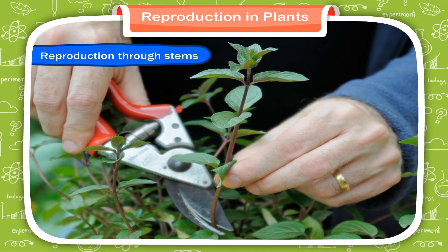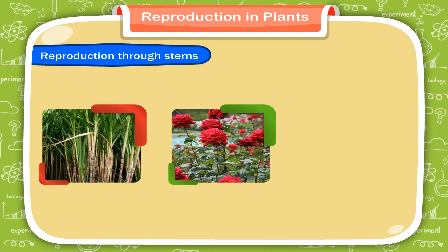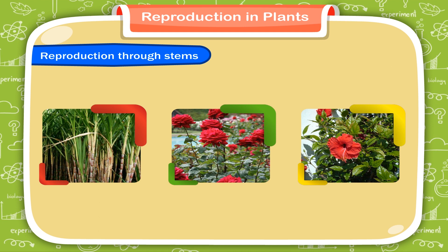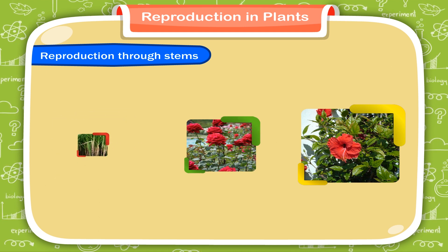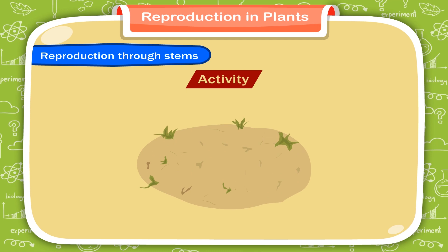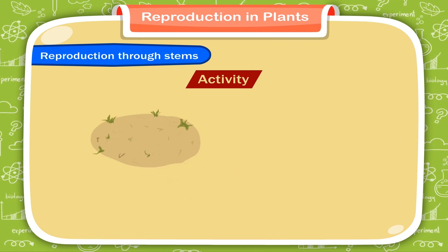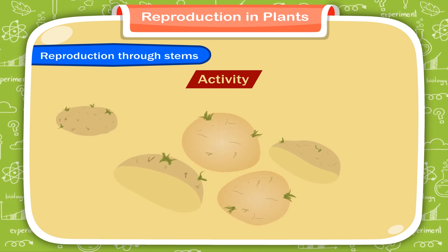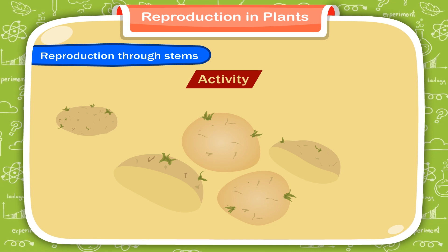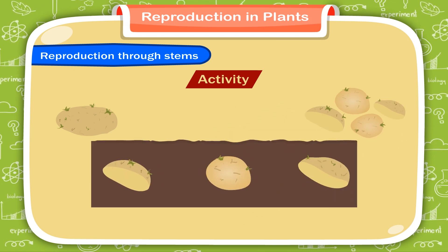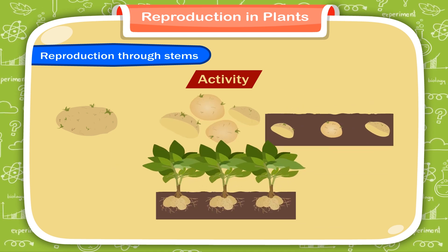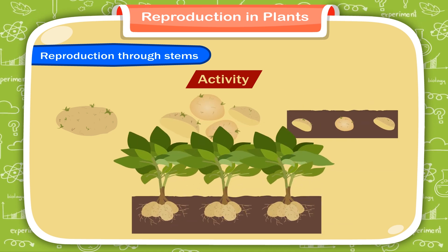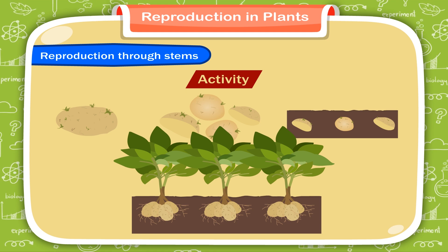Many plants like sugar cane, rose, hibiscus etc. grow from stem cuttings. Activity: Take a big potato. Cut it into several parts in such a way that each part has a bud. Plant these potato parts in moist soil. These potato parts will grow into new potato plants.